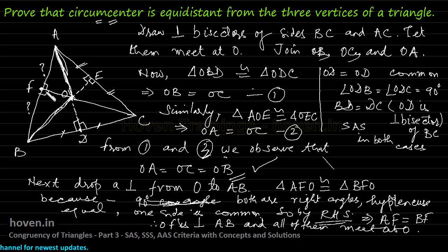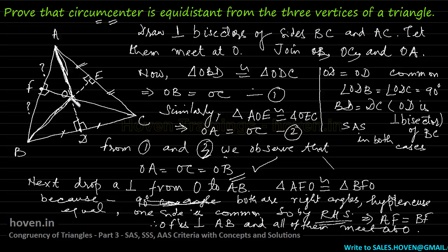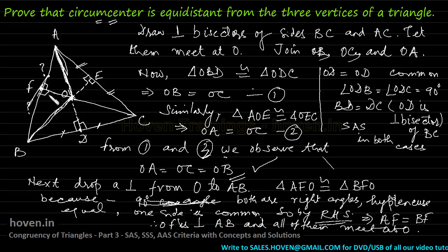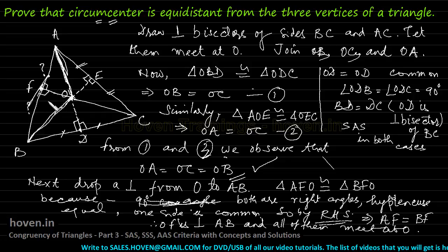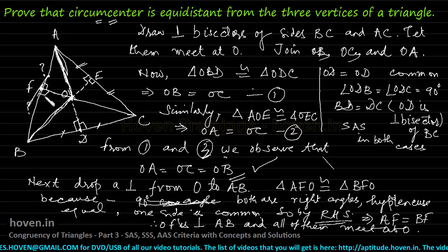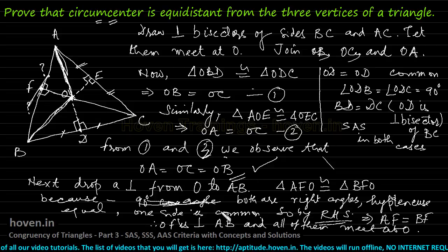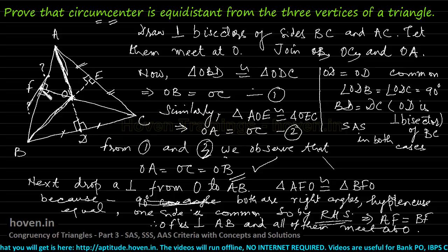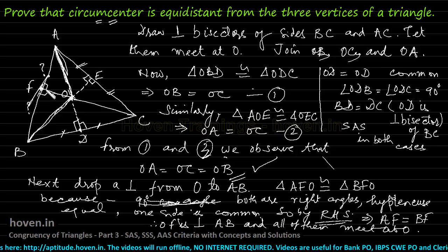Therefore, AF equals BF, which implies OF is the perpendicular bisector of AB. So all three perpendicular bisectors meet at O, which is equidistant from all three vertices. This proves our theorem. Instead of dropping a perpendicular, we could have proceeded the other way — first taking the midpoint of AB, joining it to O, and then by the SSS rule proving those triangles congruent, and from that proving the angle to be 90 degrees.